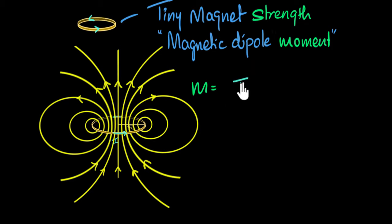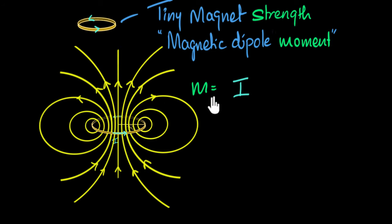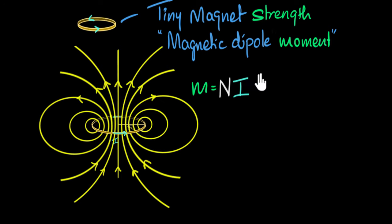The magnetic moment is proportional to current. What else determines it? What about the number of loops in your coil? If you double the number of loops, you get twice as much magnetic moment. So the magnetic moment is also proportional to the number of turns N. It also turns out that the magnetic moment is proportional to the area of the loop — it doesn't matter what shape it is, circular, square, or rectangular. The area is what matters.